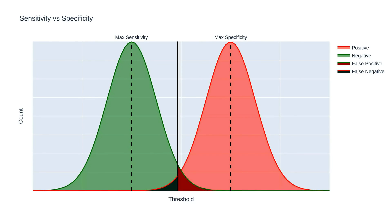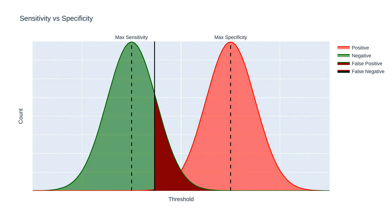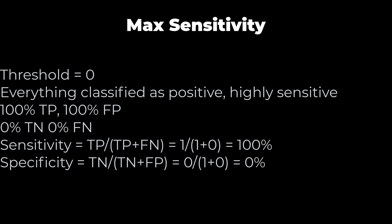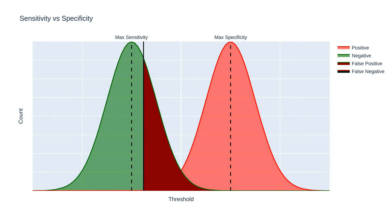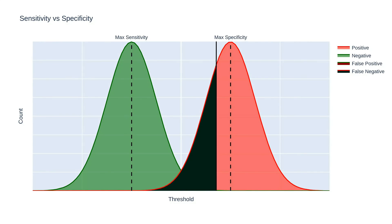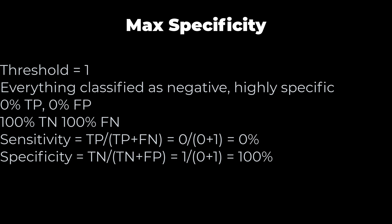Decreasing this threshold, or moving it to the left, increases the rate of true positives, but at the cost of more false positives — we are tuning the model to be more sensitive. Eventually, we reach max sensitivity where sensitivity is 100%: we now classify every positive case correctly but every negative case incorrectly, because everything is classified as positive. We have sacrificed specificity for sensitivity. Increasing the threshold, or moving it to the right, increases the rate of true negatives but at the cost of more false negatives, tuning the model to be more specific. At max specificity, every negative case is correctly classified and every positive case is incorrectly classified. We have sacrificed sensitivity for specificity.